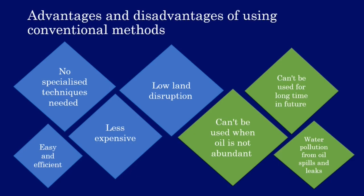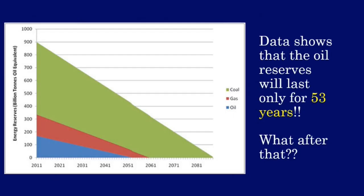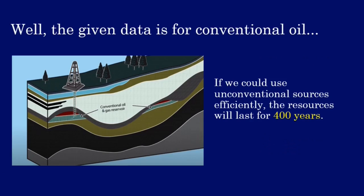Things may seem fairly straightforward, but now it's time for a u-turn. Data says that oil reserves will last for only the next 53 years. However, that data is for conventional oil only. If we could use unconventional oil efficiently, then the resources may last for the next 400 years.